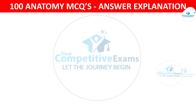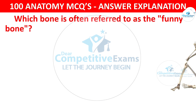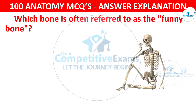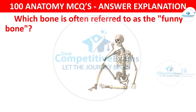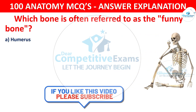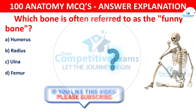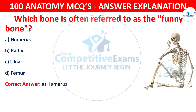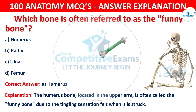Question number 87: Which bone is often referred to as the funny bone? The options are: Humerus, Radius, Ulna, or Femur. The correct answer is A — humerus. The humerus bone, located in the upper arm, is often called the funny bone due to the tingling sensation felt when it is struck.